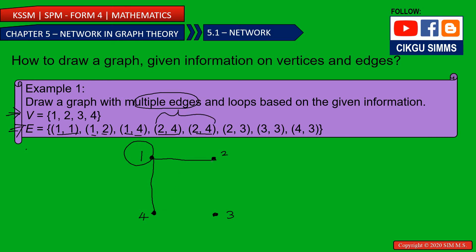So vertices 2 and 4 have two edges between them. Then we add edge (2,3) and another edge (2,3). Then (3,3) — this is a loop. And finally edges (4,3) and (4,3). The graph is now complete.